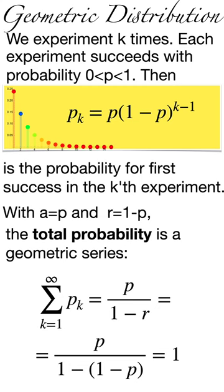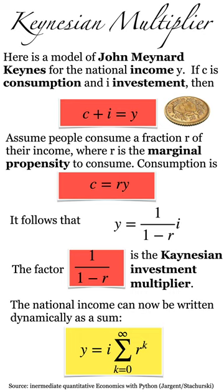In economics, geometric series appear in the context of national income. If c is consumption and i is the investment, and consumption is r times the income, we get a formula using the geometric series. Income can be written as a geometric sum, which has a dynamical interpretation.